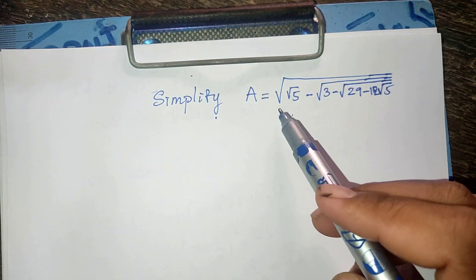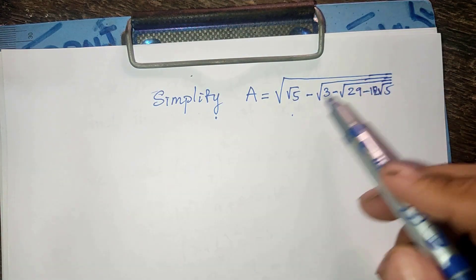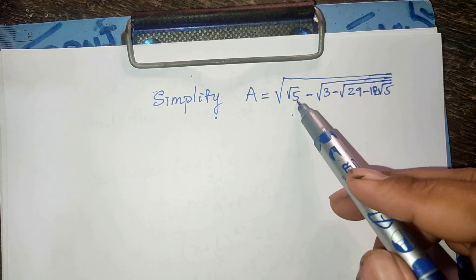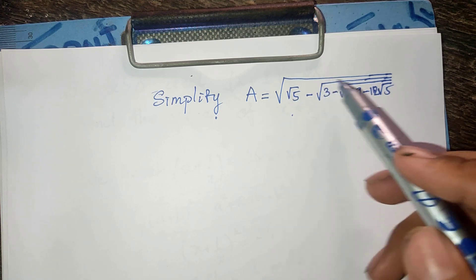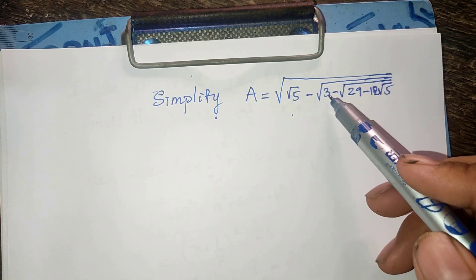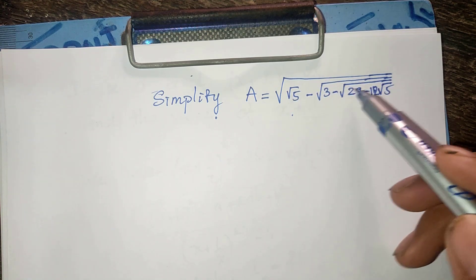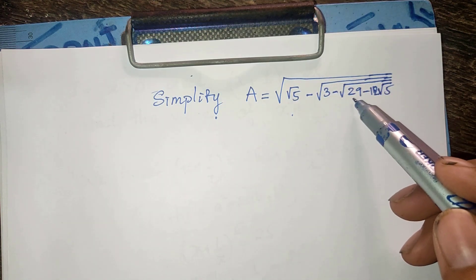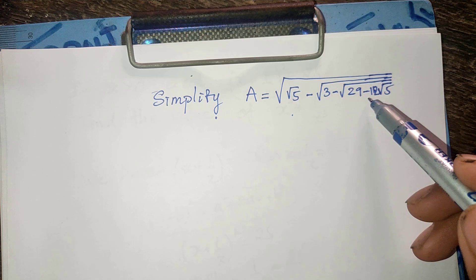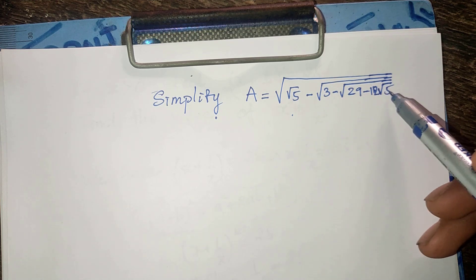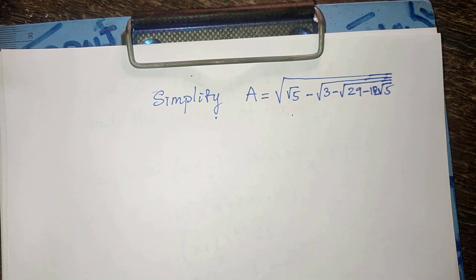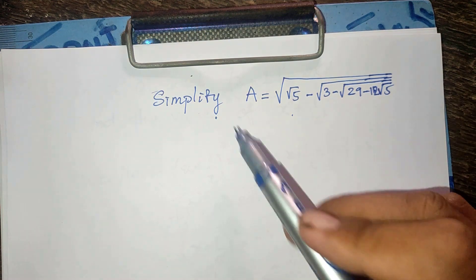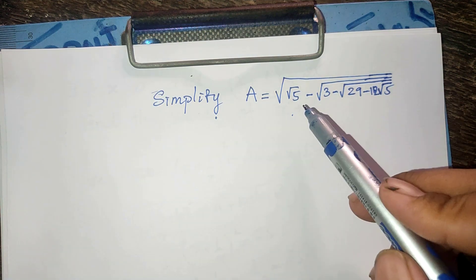Simplify A equals square root of square root of square root of 3 minus square root of 29 minus 12 square root of 5. Hello everyone, welcome to my YouTube channel. Do you know how to simplify it?